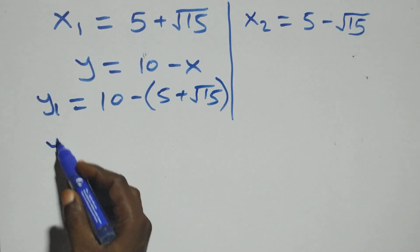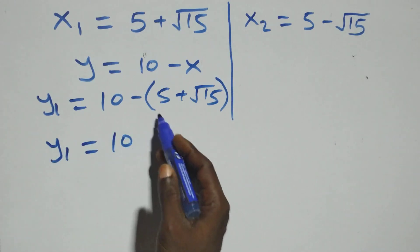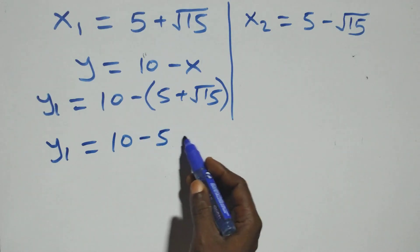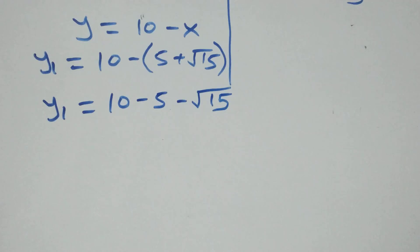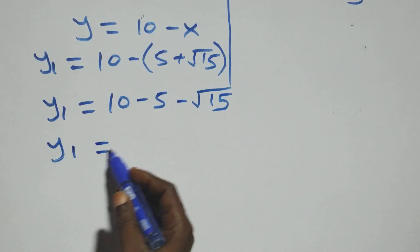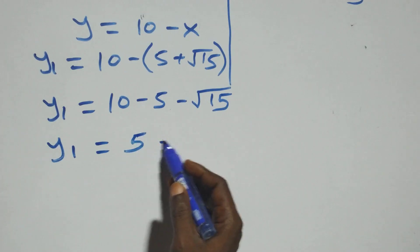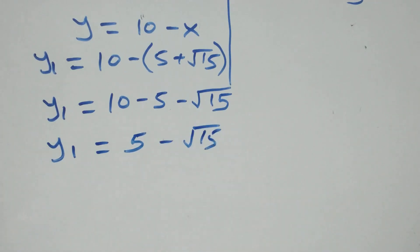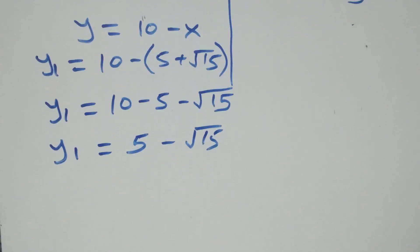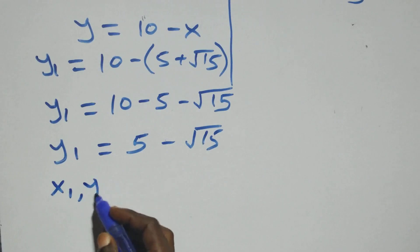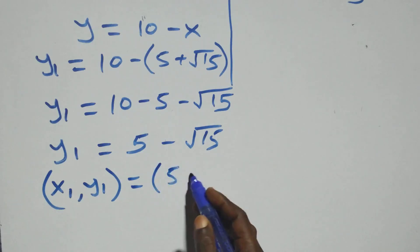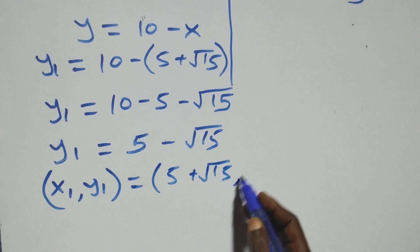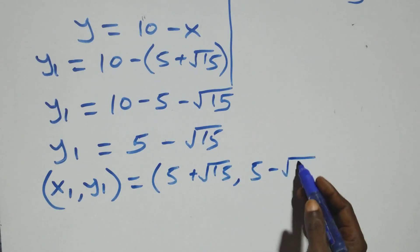Expanding: 10 minus 5 minus root 15 gives y1 equals 5 minus root 15. So the first set of solutions is x1 comma y1 equals (5 plus root 15, 5 minus root 15).